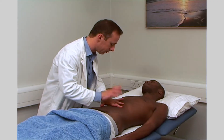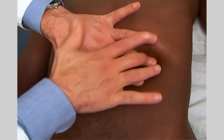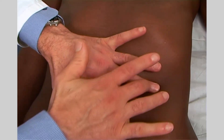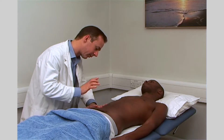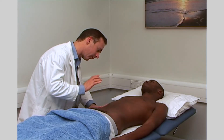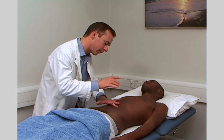When percussing for ascites — the presence of intraperitoneal fluid — you need to compare the sounds over the different regions of the abdominal cavity. The principle is that fluid will sink with gravity and gas will rise to the surface. If ascites is present and the patient has been lying supine, then there will be resonance sounds from the top of the abdomen and dullness around the flanks.